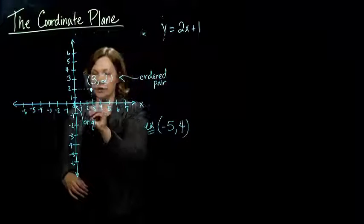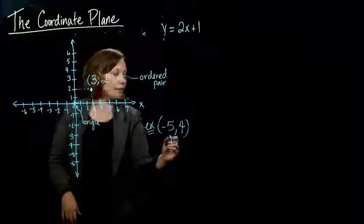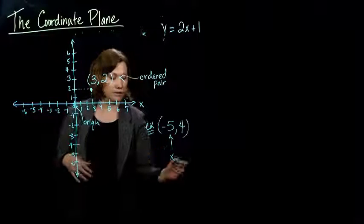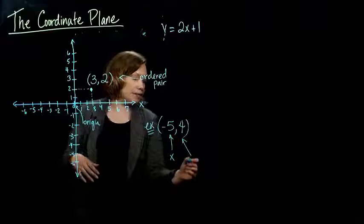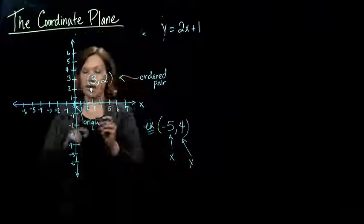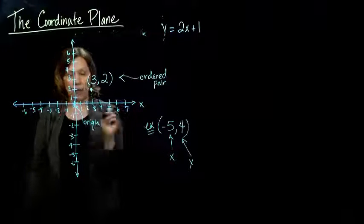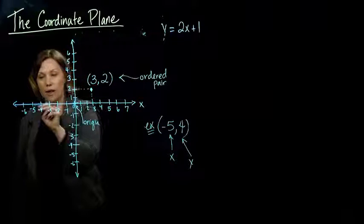So what I do, so the negative five, this represents what's on the horizontal, or the x, right? And the second number, the four, represents the y. So first I find the negative five on the x-axis, on that horizontal axis. So one, two, three, four, five.